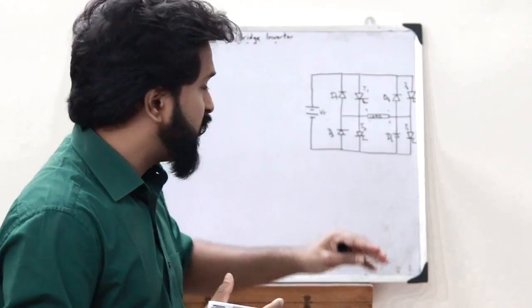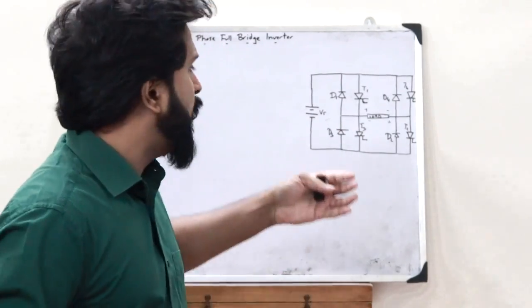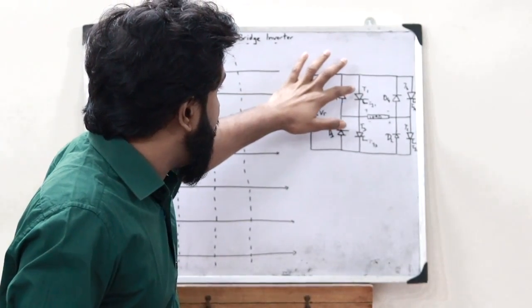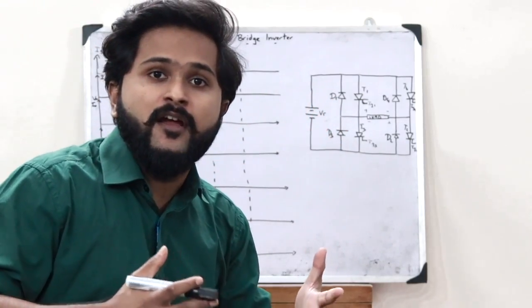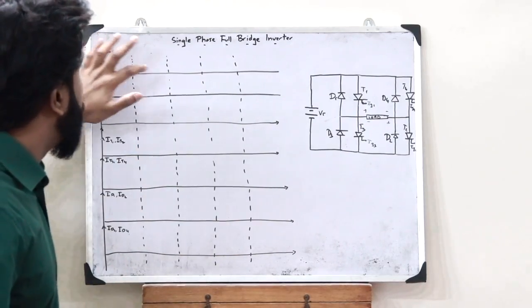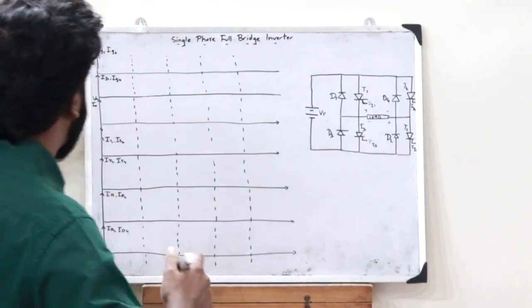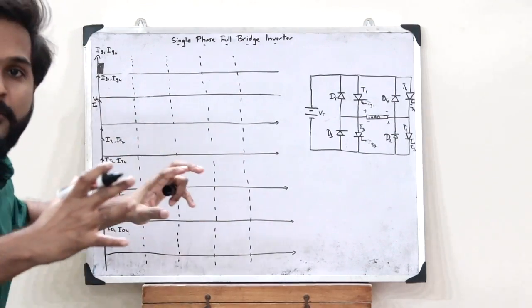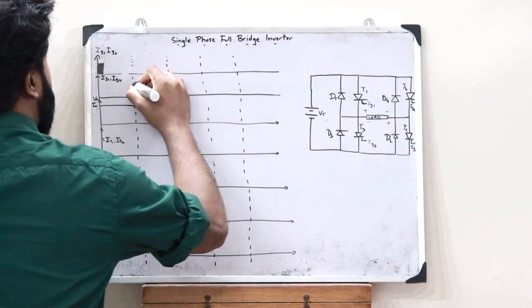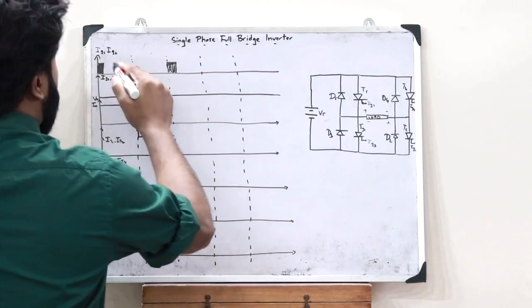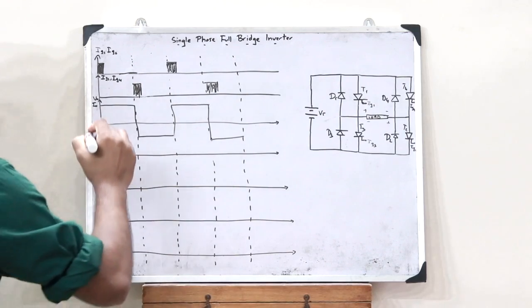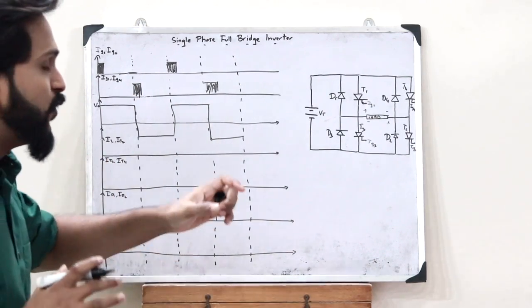Next, let us see the waveforms associated with this circuit for a clearer understanding. When a triggering pulse is given to T1 and T2, a positive value of output voltage V0 is obtained. When a triggering pulse is given to T3 and T4, a negative voltage is obtained. This alternation repeats, producing the AC output voltage waveform V0.